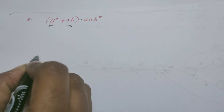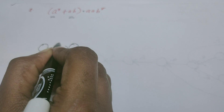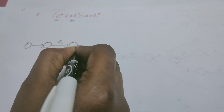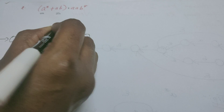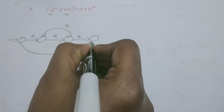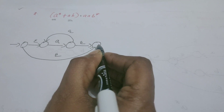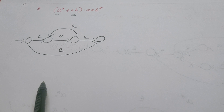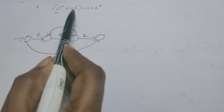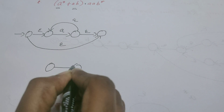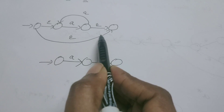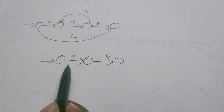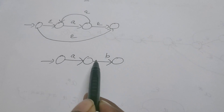First let us construct for a*. This is the machine for a; to convert it into a*, you need a new start state and a new final state. From the old final state to the old start state, an epsilon transition. From the new start state to the new final state, another epsilon. Now we draw for ab: this is a machine for a, which is further followed by b. You can connect two individual machines — one for a and one for b — via epsilon transition as well. Both are correct.